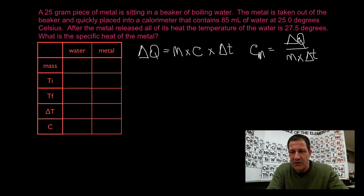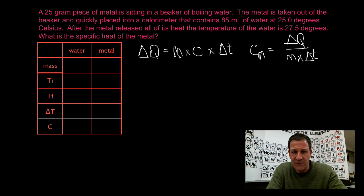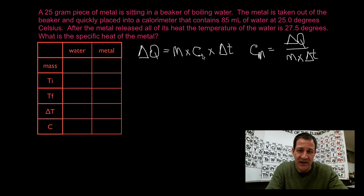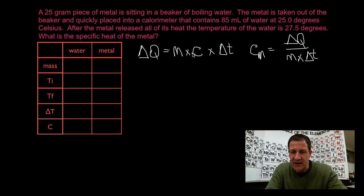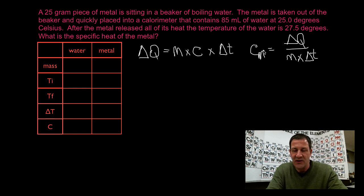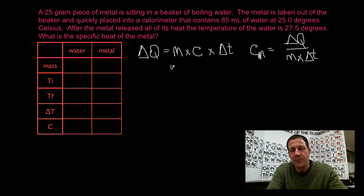We have a problem here because we don't know the change in heat of the metal. We could use this equation to calculate the change in heat of the metal but we don't know the specific heat, so we're kind of stuck here in this catch-22. We don't know specific heat so we can't calculate change in heat. We don't know change in heat so we can't calculate specific heat.